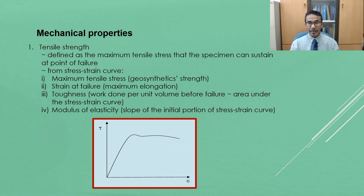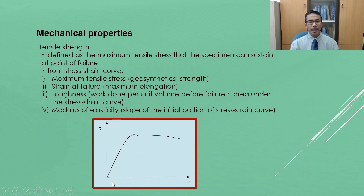Now let's move on to mechanical properties. In this video I will cover five mechanical properties: tensile strength, fatigue strength, confined tensile strength, compressibility and puncture strength. Tensile strength is defined as the maximum tensile stress that a specimen can sustain at the point of failure. From the stress-strain curve we can obtain maximum tensile stress, strain at failure, toughness and modulus of elasticity.